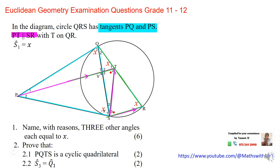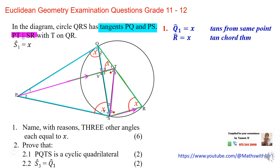Now that we have put together the information we need, we can compile our answer. It is always important to read the question carefully before answering. We have established that Q1 equals S1 — tangents from the same point. Then Q1 equals angle R — that is the tan-chord theorem. Then T1 equals angle R — corresponding angles. So Q1 equals X (tangents from same point), R equals X (tan-chord theorem), and T1 equals X (corresponding angles, PT ∥ SR).